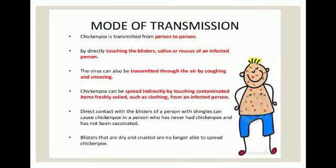Now we see how chicken pox spreads — mode of transmission. Chicken pox is transmitted from person to person by directly touching the blister, saliva, or mucus of an infected person. The virus can also be transmitted through air by coughing and sneezing. It can spread indirectly by touching contaminated items such as clothing from an infected person. Direct contact with the blisters of a person with the sickness can cause chicken pox in someone who has never had it and not been vaccinated.